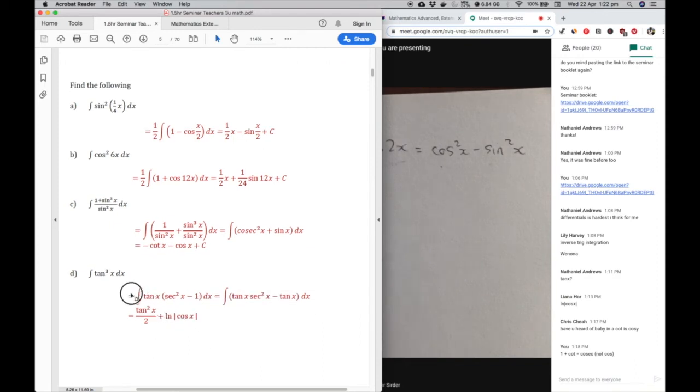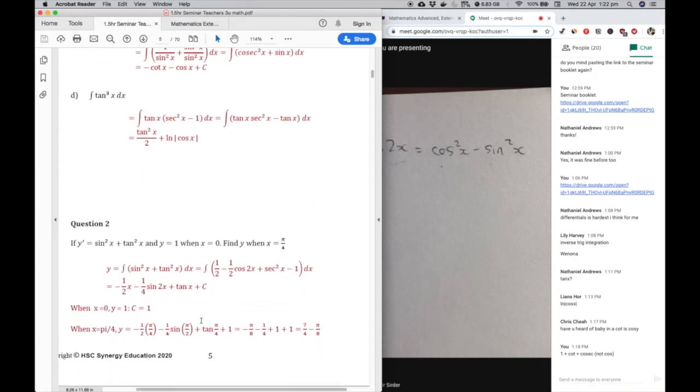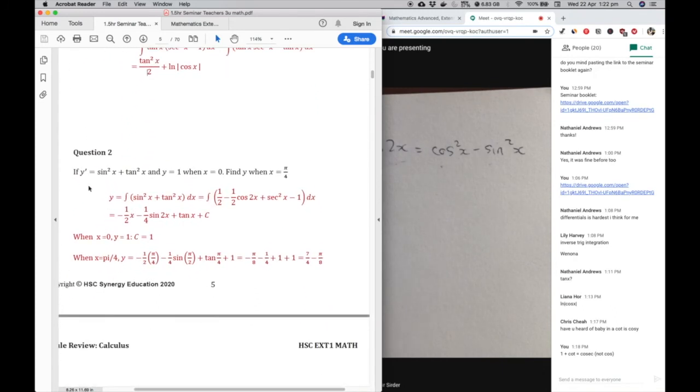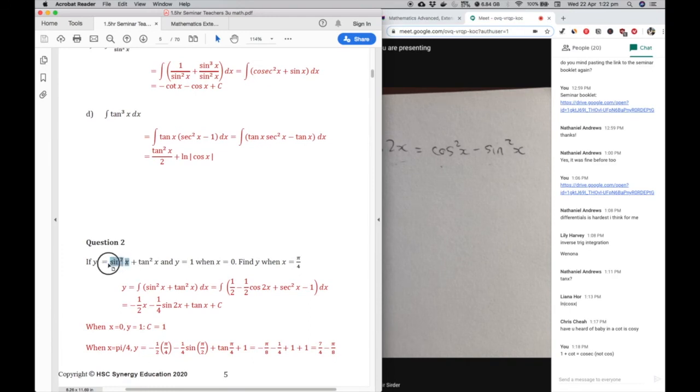Alright, if y dash equals sine squared plus tan squared and y equals 1, x equals 0, find y when x equals pi over 4. So what we want to do is integrate this again, the integral of sine squared. Again, we use the same method as we did before. Hopefully you guys should practice this. You should be able to do it, practice it enough until you can do it without pen and paper. If you can do it in your head, that's when you know you've practiced it enough.